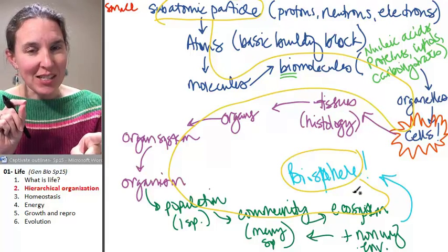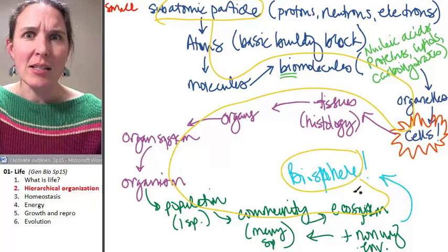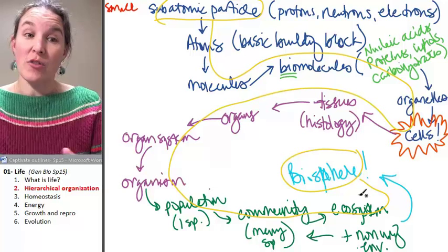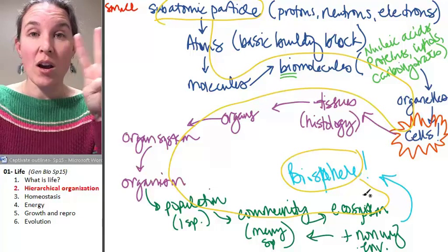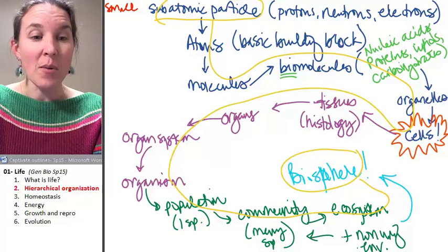All living things display this kind of hierarchical organization. Just because something is hierarchically organized doesn't mean that it is necessarily alive. So there are other characteristics. There are four more characteristics that we're going to look at. And the next one is homeostasis.